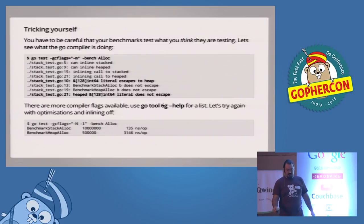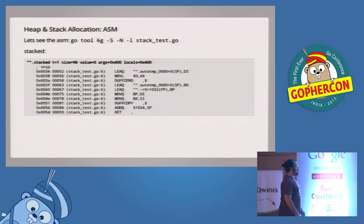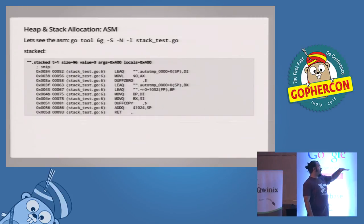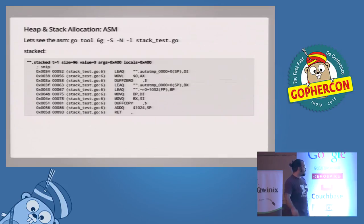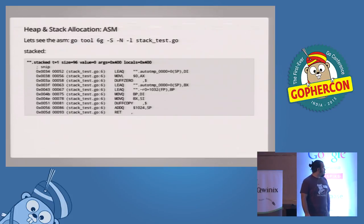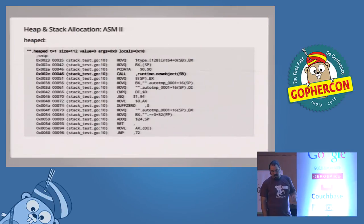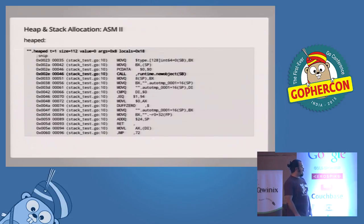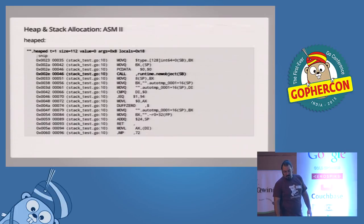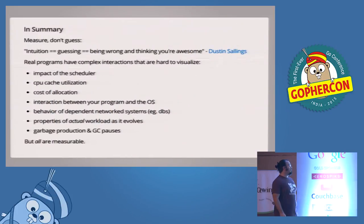We can also look at the assembly. For the stack allocation version, the args — which hold arguments and return value — are 1024 bytes (0x400 in hex). For the heap allocation version, we can see we're using runtime.newobject — that's allocating a new object the runtime and GC know about, which will get garbage collected later. In summary: measure, don't guess. Intuition equals guessing equals being wrong while thinking you're awesome. Measure everything so you will know what you're doing.